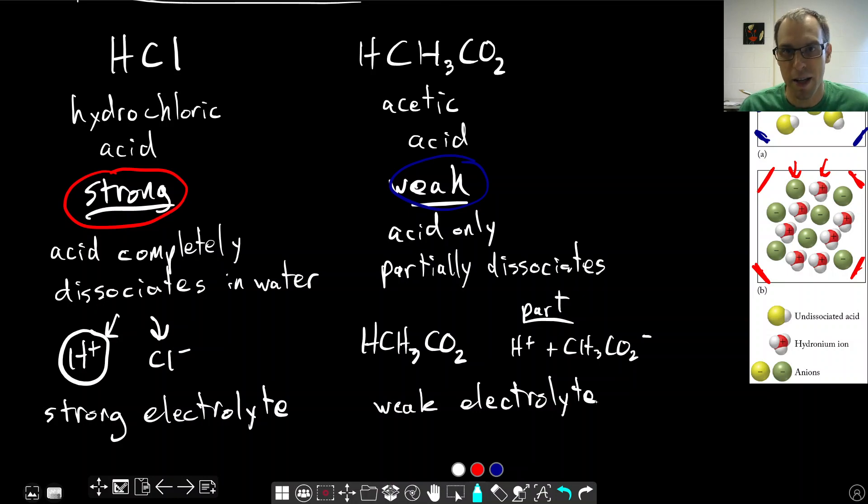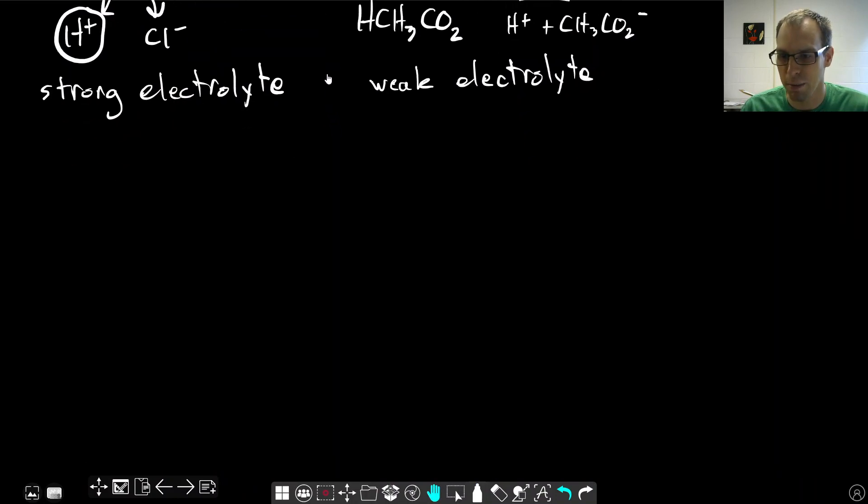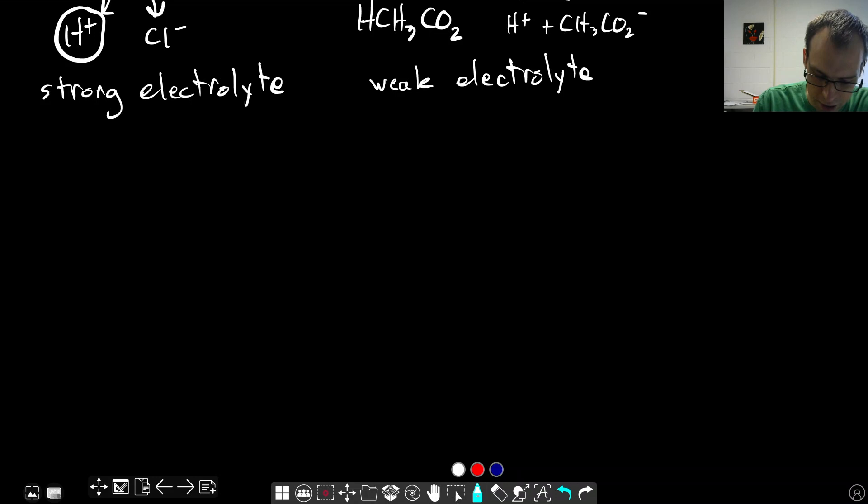Now we can apply the same idea to bases. The difference with bases being, instead of thinking about protons, we're now thinking about usually hydroxide. So an example of a strong base is a molecule like NaOH, sodium hydroxide, which again we get complete dissociation into sodium ions and hydroxide ions. So this is an example of a strong base.